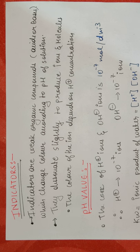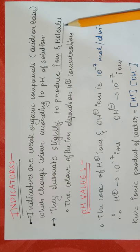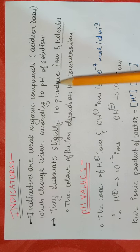So in a similar sense, indicators are weak organic compounds, acids or bases, which change color according to the pH of the solution. pH ka matlab hota hai power of hydrogen. In German it is called potenz hydrogen. That is how much amount of hydrogen ion is present. Indicators work by dissociating slightly to produce ions or molecules that will react with the H+ or the OH- ions.